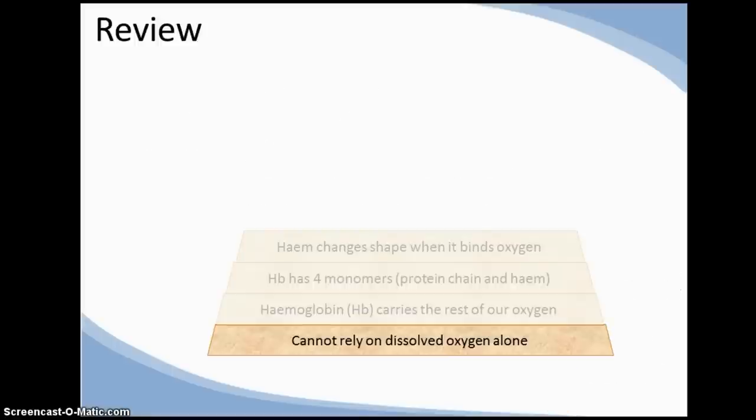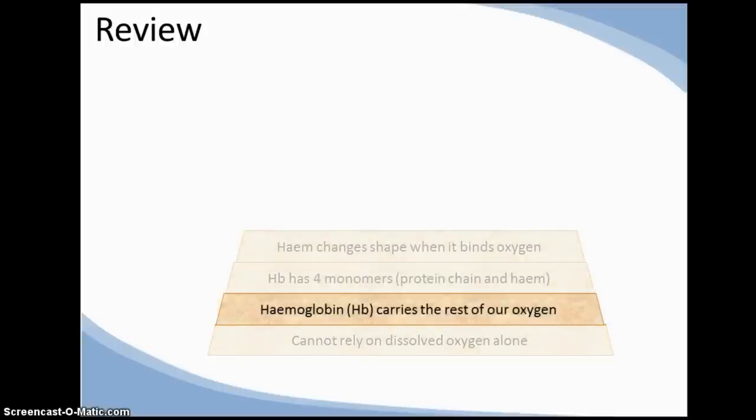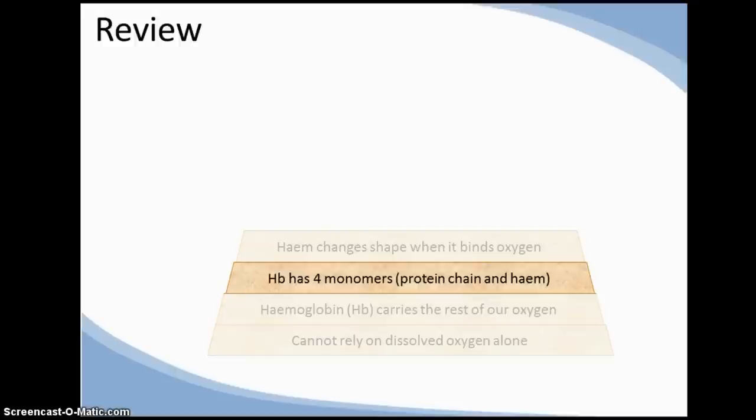Today's lecture is going to build on what we covered last time. We calculated that oxygen dissolved in the blood supplies less than 10% of resting demand. To meet the deficit, we introduced haemoglobin, a tetrameric protein consisting of four monomers, each with a protein chain and a functional group called heme, which is capable of binding one molecule of oxygen.